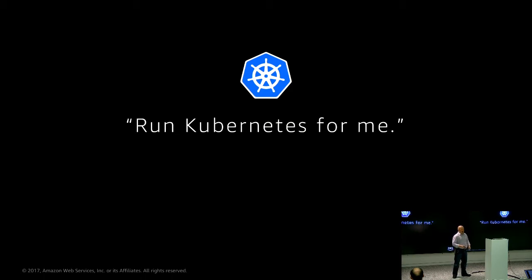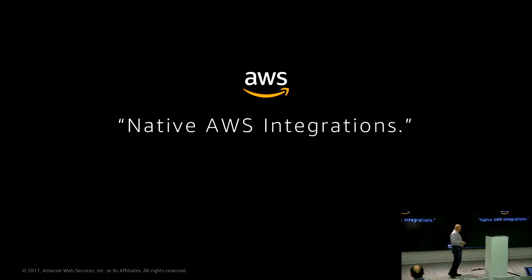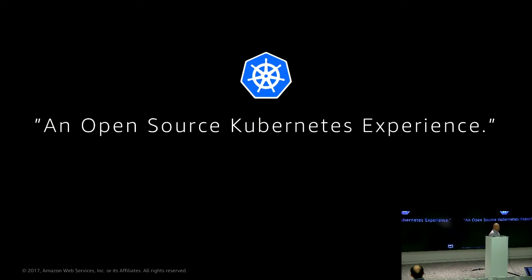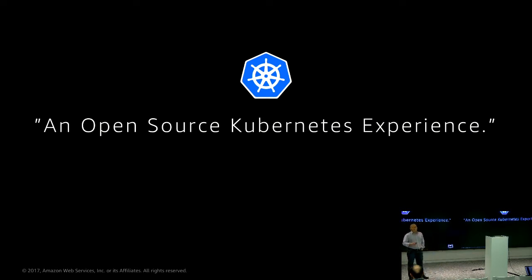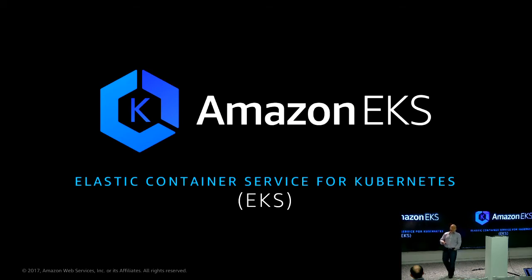Customers asked: please run Kubernetes for me. And besides just running it, they wanted integration with AWS things like VPC networking, load balancing, and access to S3 or other services. But they also wanted the open source Kubernetes experience — don't create any forks or AWS-specific versions. Give us the opportunity to use all the open source tools we're already using with Kubernetes.